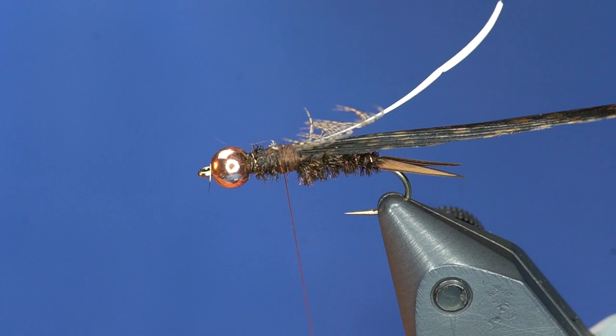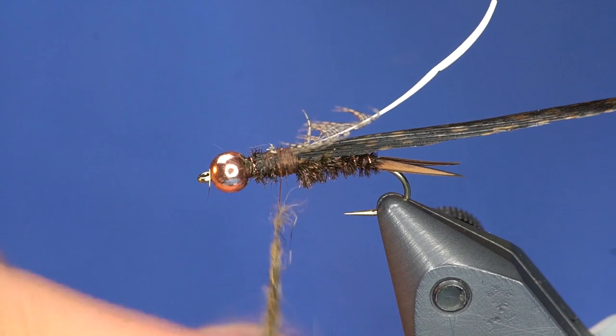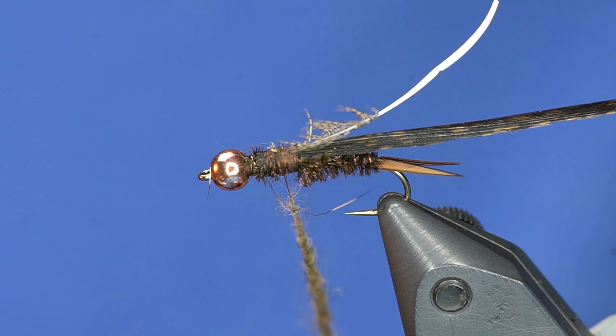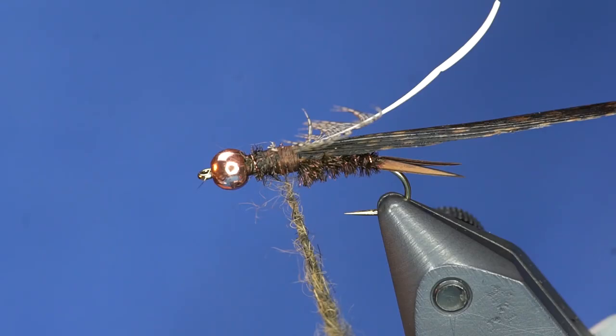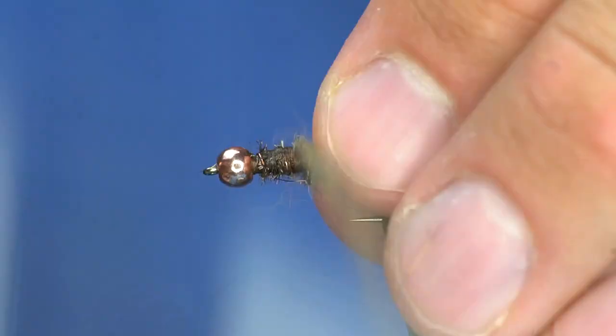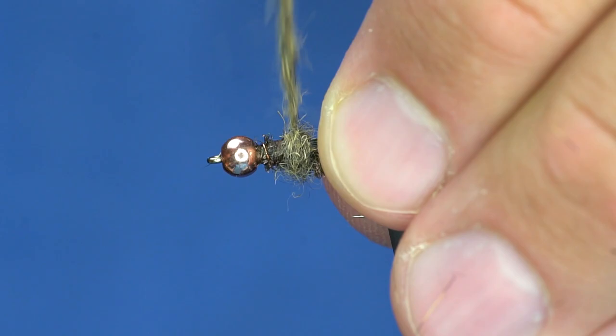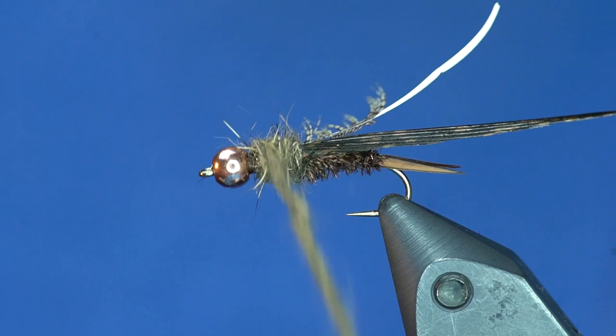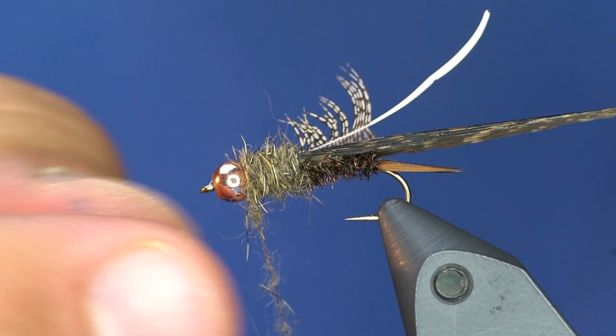So I'm just going to dub up the thorax. So I got a pretty long dubbing noodle because I want this to be pretty beefy. You can also use hare's ear for this. Snowshoe rabbit foot dubbing. A lot of other dubbings will be sufficient. But I'm really on the squirrel right now. So you can see that's pretty buggy as I wrap it. And I'm just going to wrap that up to about the bead. And then take that off. Squirrel is real easy to remove.